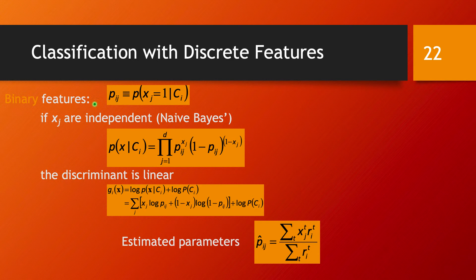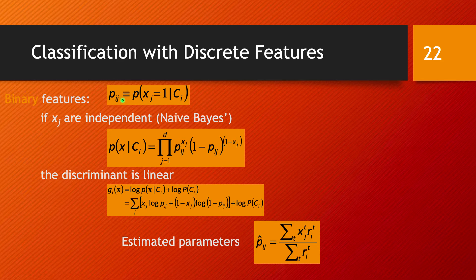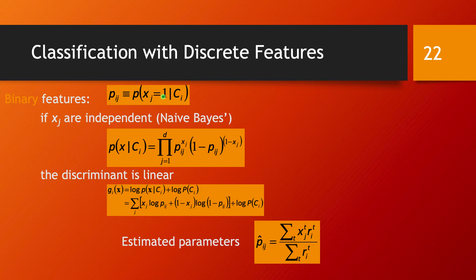In the binary case, each feature only has a value 0 or 1. We introduce this notation: the set of parameters we need to estimate is the probability p_ij, which by definition is the probability that feature j has value 1 for a data point from class C_i.